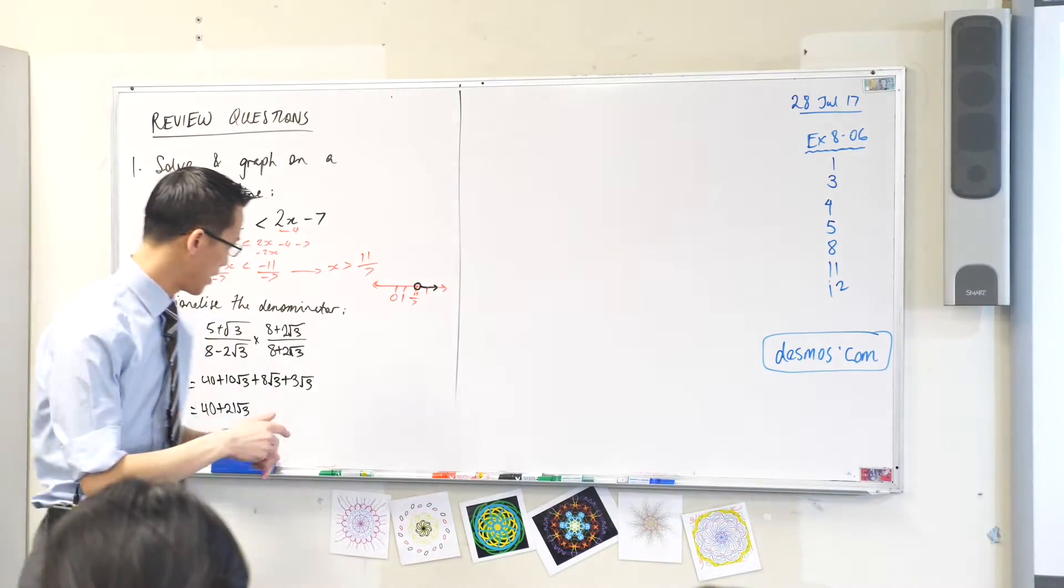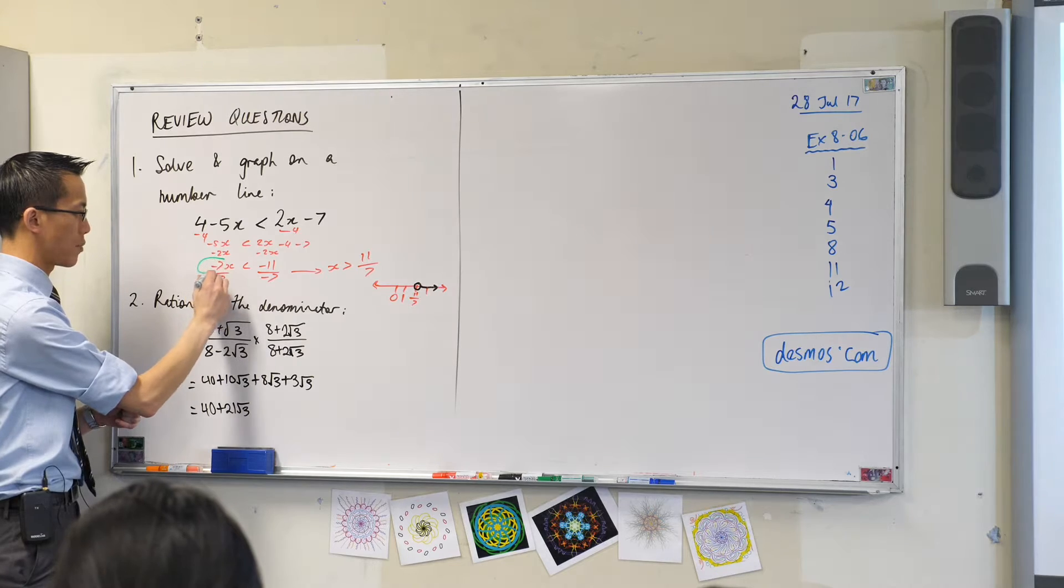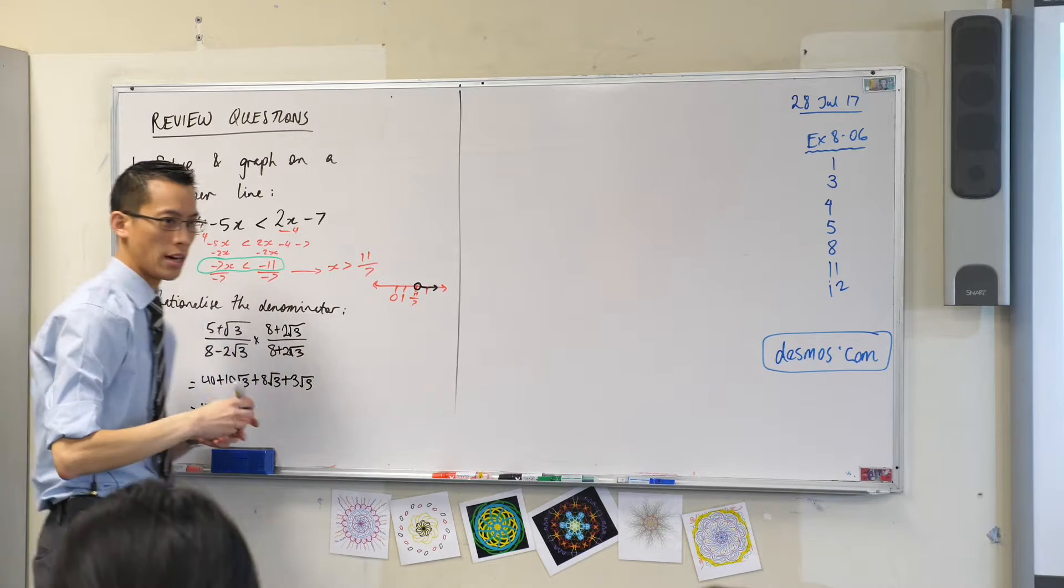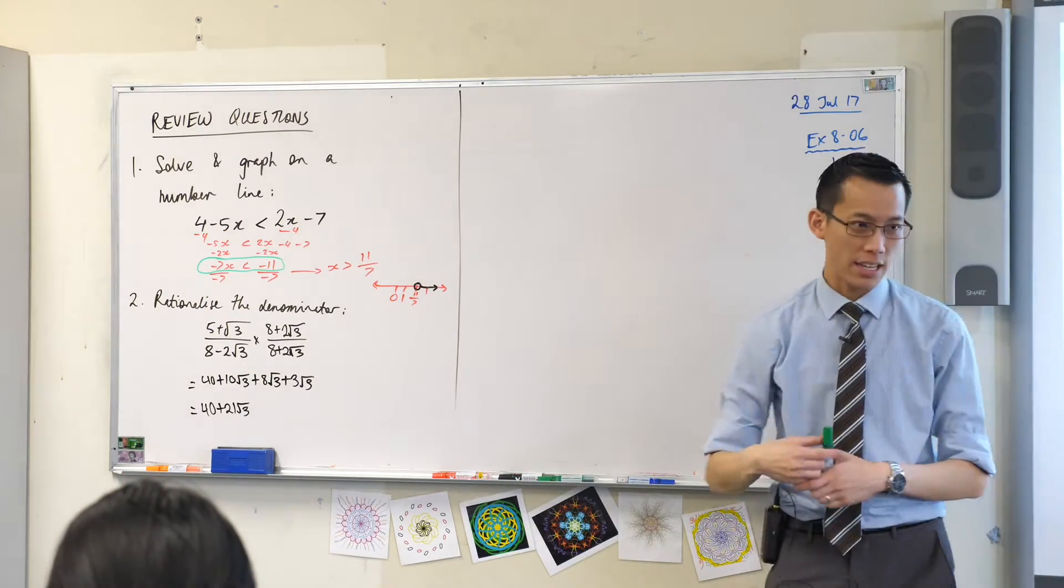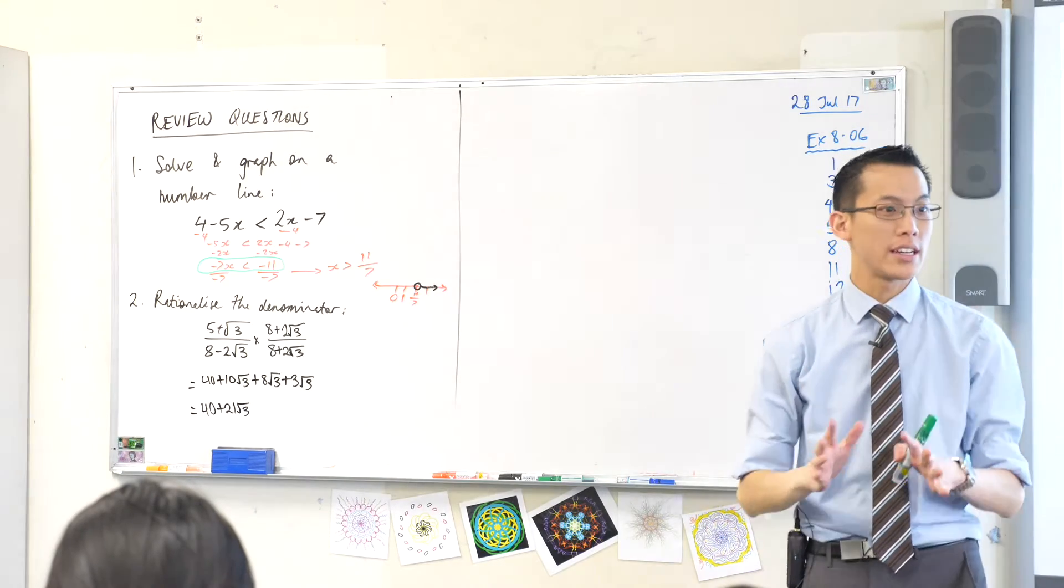When he gets to that point, this is a good color to choose. He's got this. This is what he's got here: minus 7x on the left hand side is less than negative 11. And so far he's just treated it like an equation.